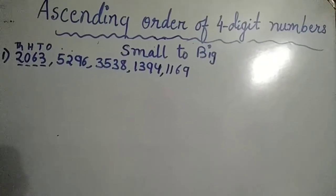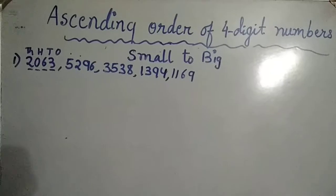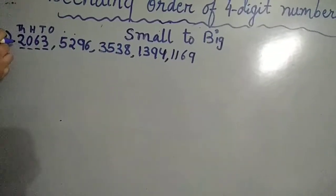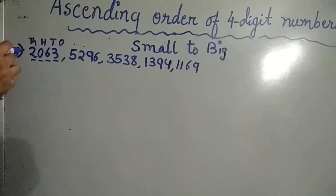In ascending order, when we have to compare the numbers, we have to compare the first digit of each number, whichever place it is.